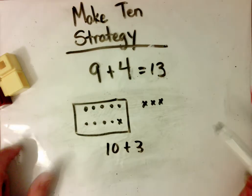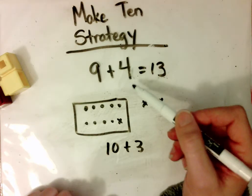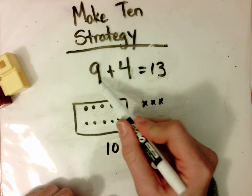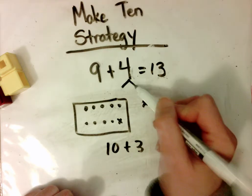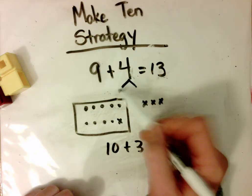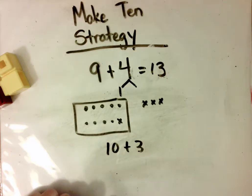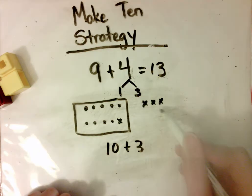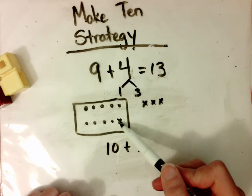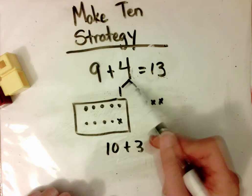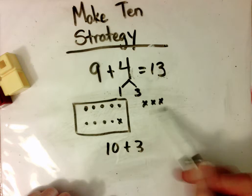If I want to show that work of what I did in a written method, I can say that I kept my 9 just the way it was. And I moved or I took 1 from 4 so that I could make 10. 9 plus 1 equals 10. And I left the other 3 over here. The number bond shows what we used to make 10 and what we had that we are going to add to that 10 afterwards.